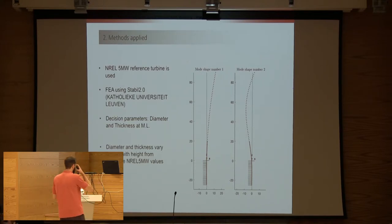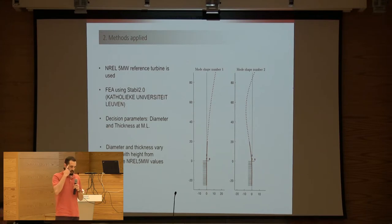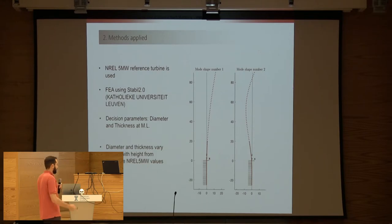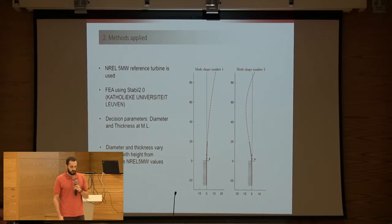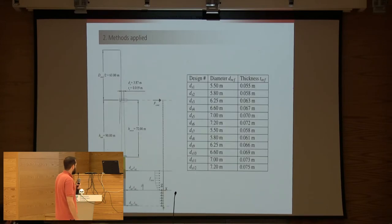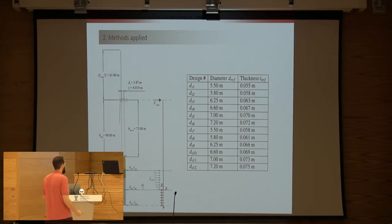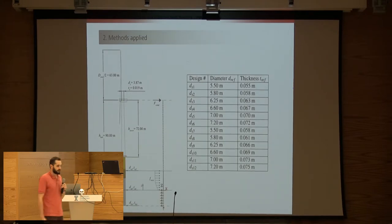Due to some non-linearities, you need to run simulations in the time domain and solve the equations of motion. The simplification here is to use only the first mode of vibration to represent the dynamic behavior. I proposed twelve designs based on two decision parameters — essentially the diameter and the wall thickness — and certain hub height. I assumed a linear relation between the soil stiffness and this reference, to keep the number of discrete decisions manageable at twelve designs.